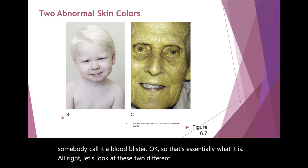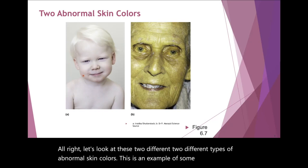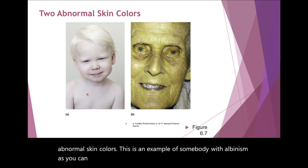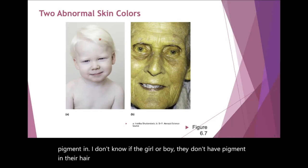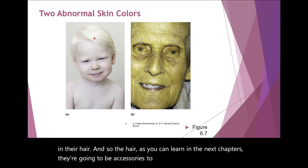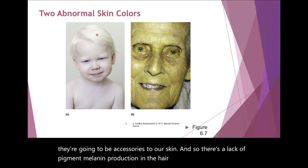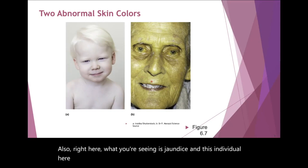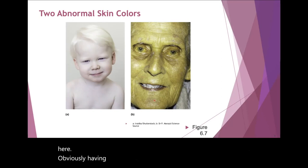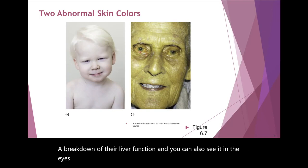Here's an example of somebody with albinism. As you can see, not only is the skin tone white, there's no pigment in their hair either. Hair is going to be an accessory to our skin, and there's a lack of melanin production in the hair as well. And here you're seeing jaundice — this individual is obviously having a breakdown of their liver function, and you can also see it in the eyes, very yellowing of the eyes.